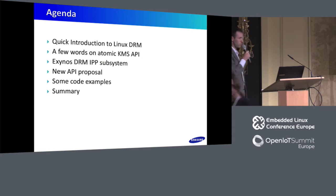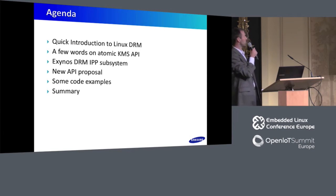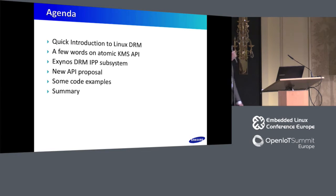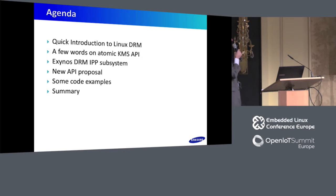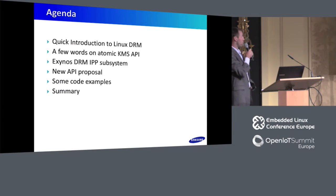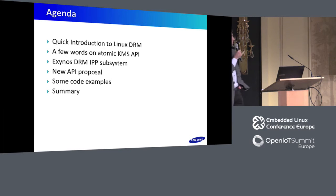This is the agenda of my presentation. At the beginning I will tell you a few words about the Linux DRM subsystem. Then I will make a short introduction to the KMS API that is a part of the Linux DRM subsystem. And then I will present what the Exynos DRM IPP subsystem is and why it is important for us.